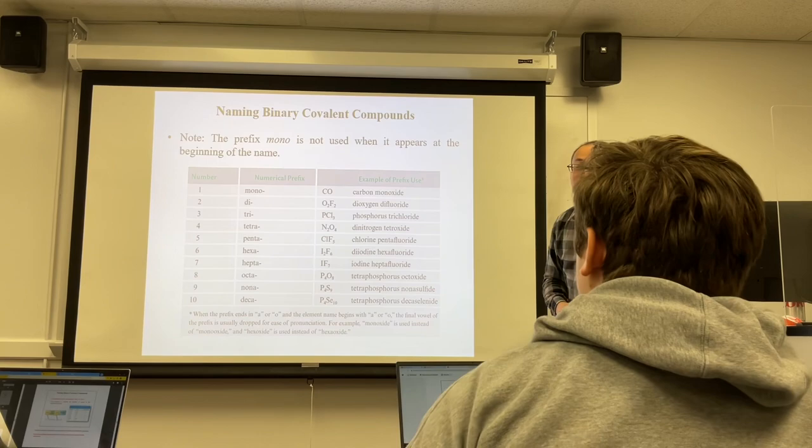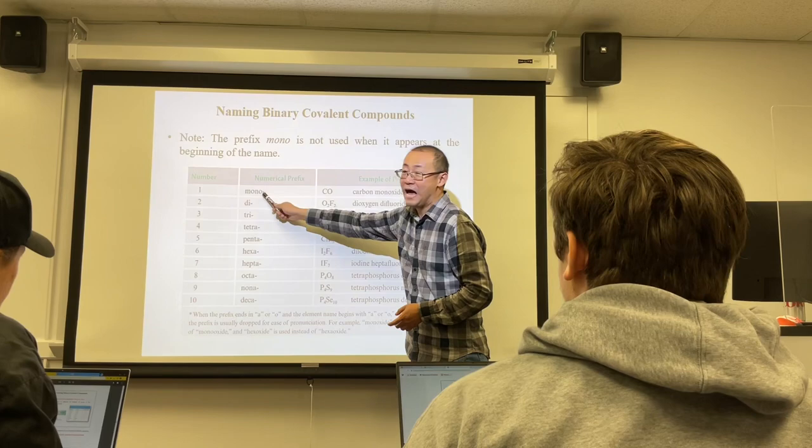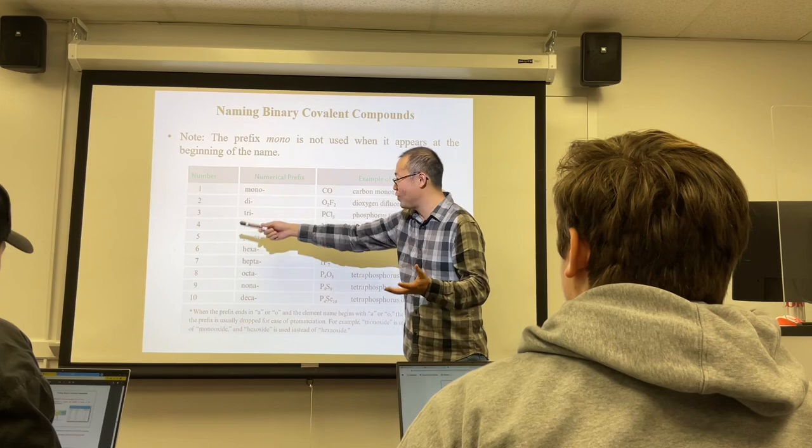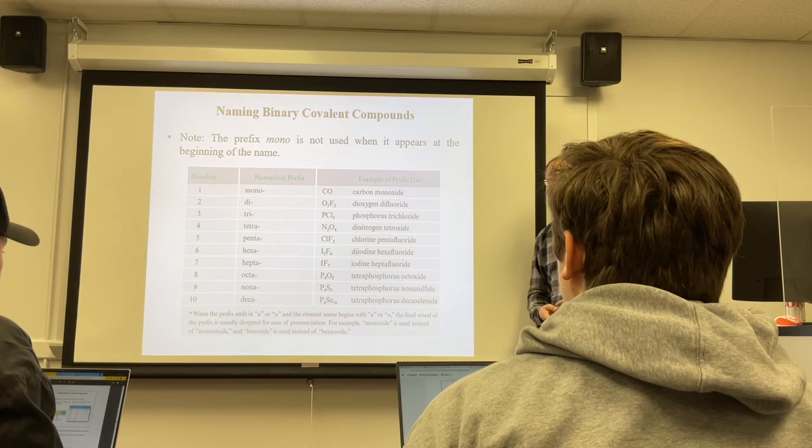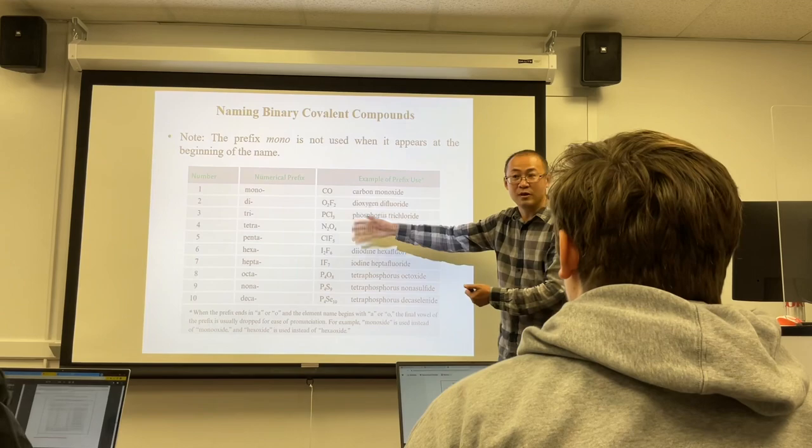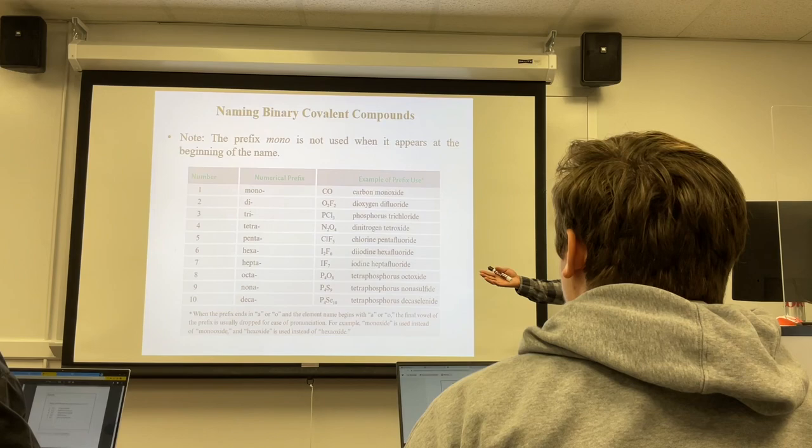Another exception: some molecules like water, hydrogen peroxide, ammonia, hydrazine, methane, ethane, nitrous oxide, and nitric oxide have common names accepted by the whole chemistry field. People use their common names instead of systematic names. So these are exceptions where common names are used rather than the binary covalent naming rules.